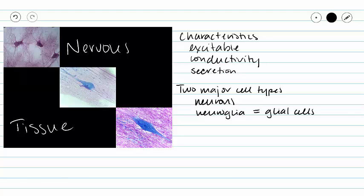Now that we have some unifying characteristics of nervous tissue, let's take a closer look. Here we see a slide of a couple of different neurons and our neuroglia, and all of the processes that stretch in between these cells.